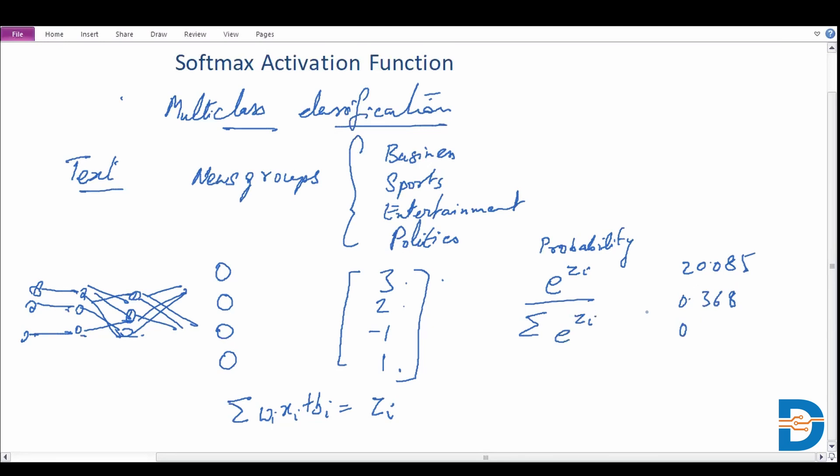E to the power 2 gives us about 7.4. For minus 1 we're getting about 0.368, and plus 1 gives us 2.718. So these are the e to the power zi values.